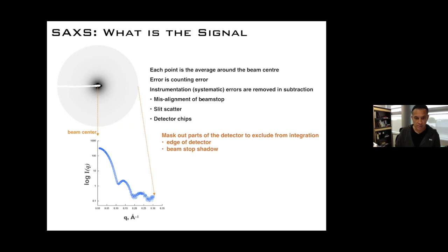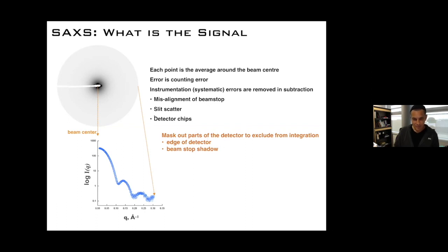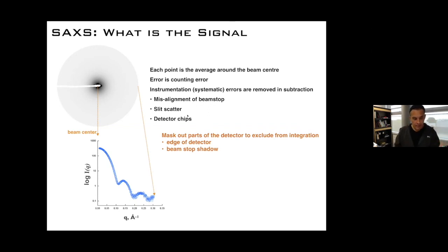Sometimes there might be a vibration or something moves slightly, and you'll see flaring around the beam stop especially with misalignment. What you see in white is the actual beam stop — this was at ESRF from a long time ago. What beamline scientists will do is mask all this out so that when they do the average they skip this part. You should ask your beamline scientists to redo the mask if you see a problem.